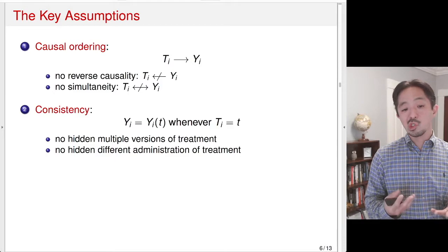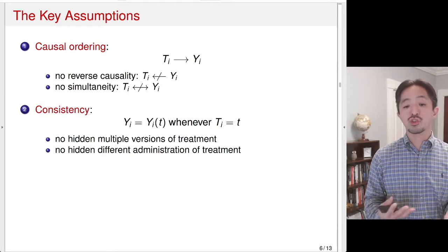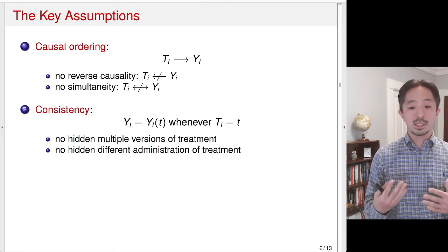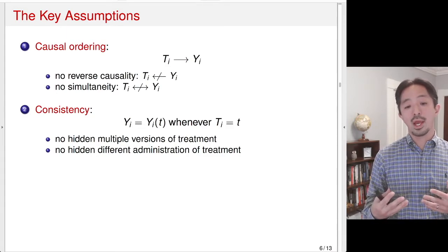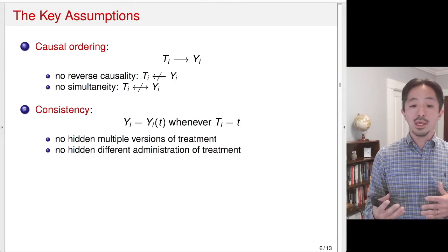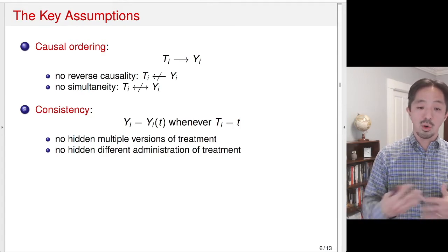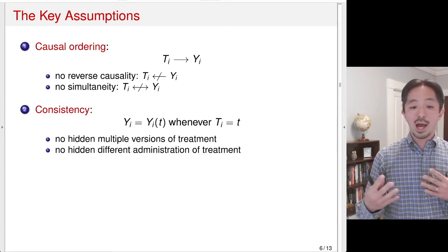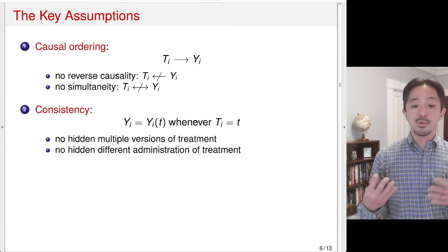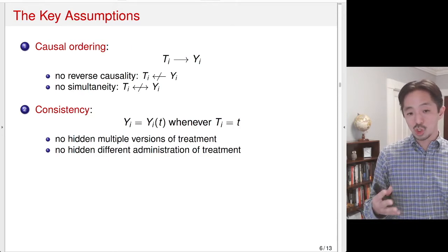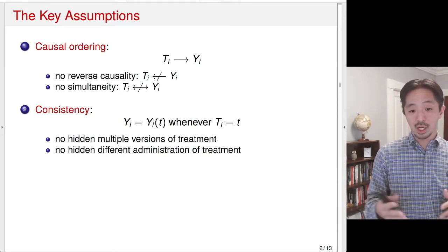Similarly, we assume no hidden different administration of treatment. So even though canvassing is done, it could be done in different ways — maybe at a different time of day, maybe by a different person, like a male canvasser versus a female canvasser, or a younger or older canvasser. All those different administrations may lead to different outcomes. If that happens, this assumption would be violated, strictly speaking.